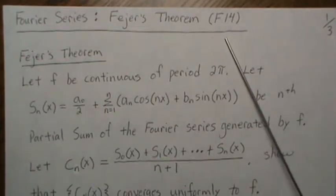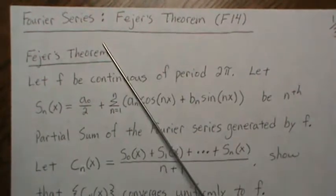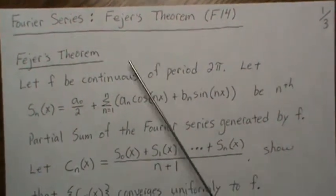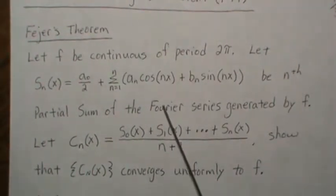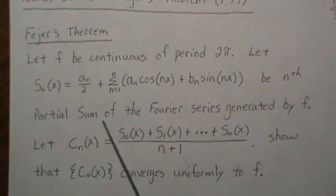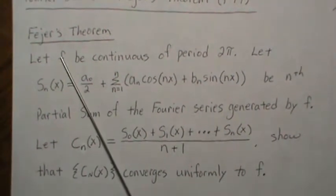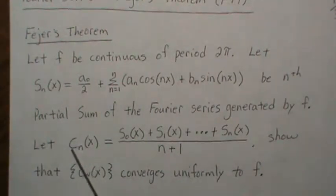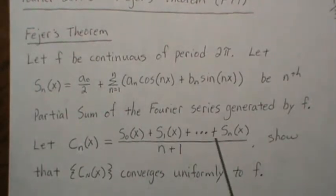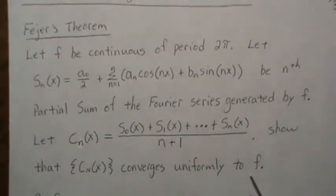Hello. In the 14th video in my series called the Fourier series, we're going to look at Fejér's theorem. Fejér's theorem is this: let F be continuous and have period 2π, let Sn be the nth partial sum of the Fourier series generated by F, and let Cn be the Cesàro sum of these partial sums. We want to show that this sequence converges uniformly to F.